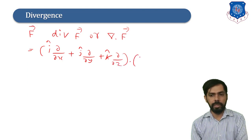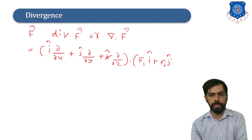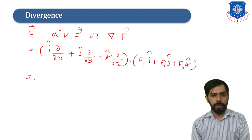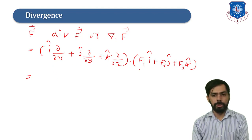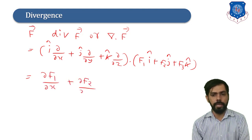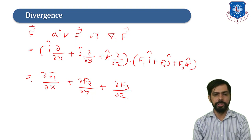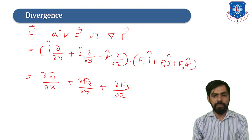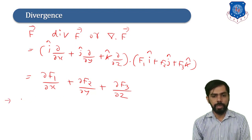The vector f is given by f1 i-cap + f2 j-cap + f3 k-cap. Taking the dot product of del and f gives us ∂f1/∂x + ∂f2/∂y + ∂f3/∂z. This is the divergence of vector f, and we can see that divergence of f is a scalar quantity.